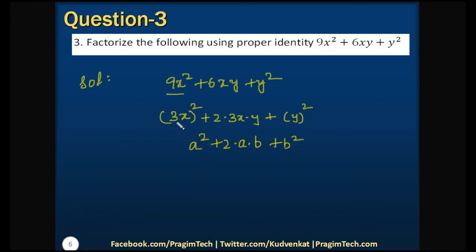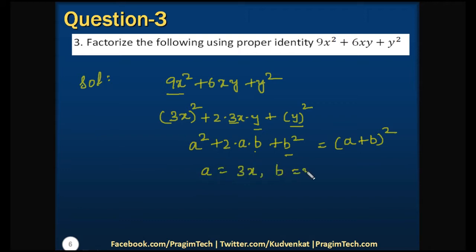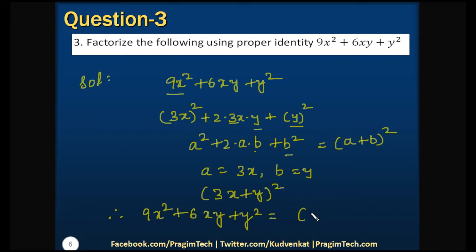This is now in the form a² + 2ab + b², where a = 3x and b = y. As we know, a² + 2ab + b² = (a + b)². So in place of a we have 3x and in place of b we have y, giving us (3x + y)². Therefore 9x² + 6xy + y² = (3x + y)².